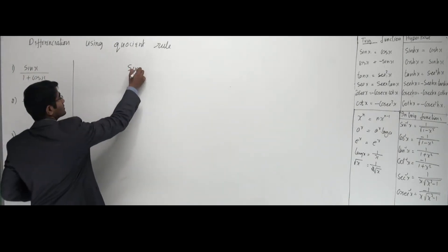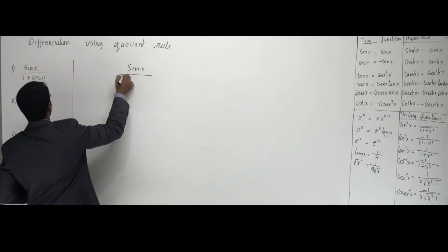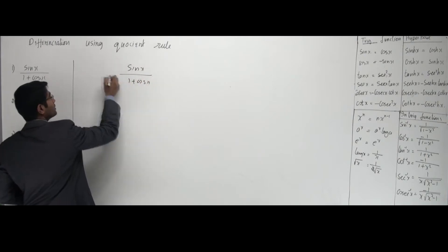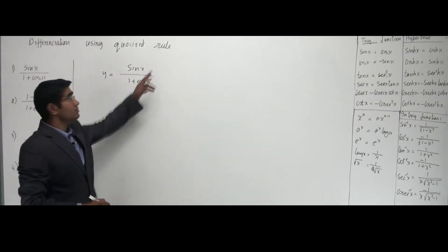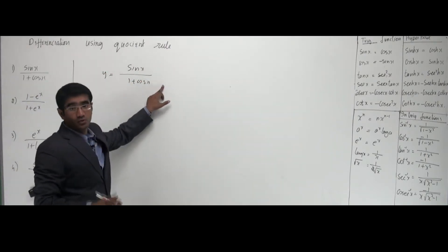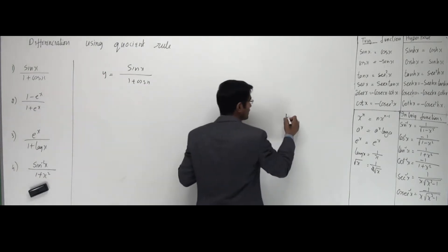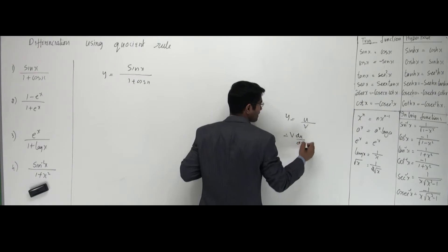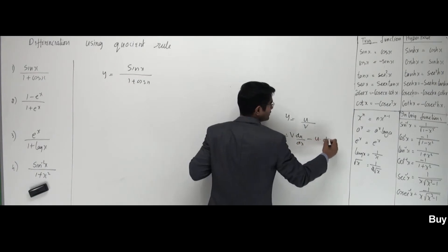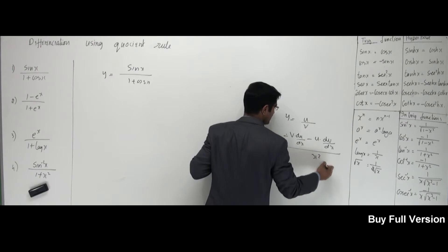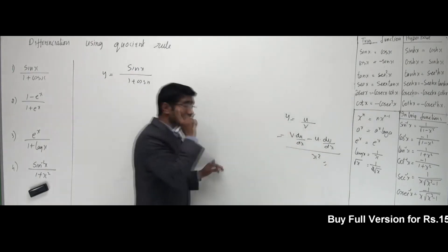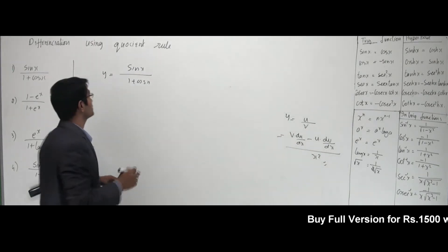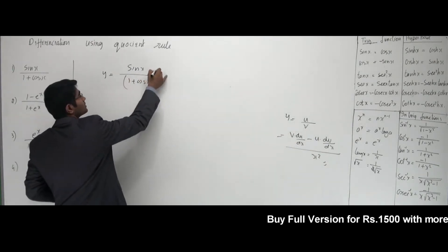The first problem says sine of x divided by 1 plus cos x. Now what exactly do we have? We have a formula of u by v. y is equal to u by v, and that goes like v times du/dx minus u times dv/dx, all divided by v squared. That's what the formula is. So v is the denominator — let's take the whole denominator as v and the numerator as u.